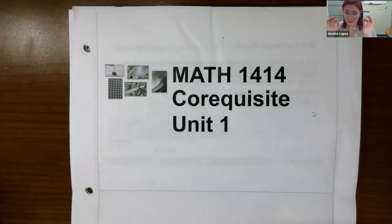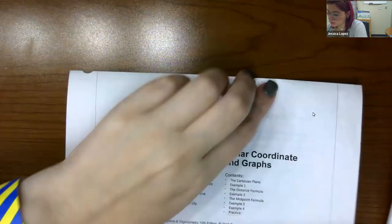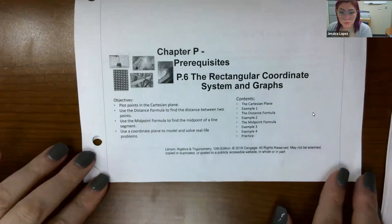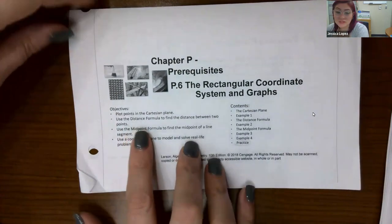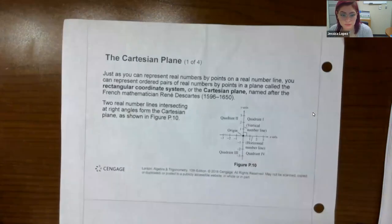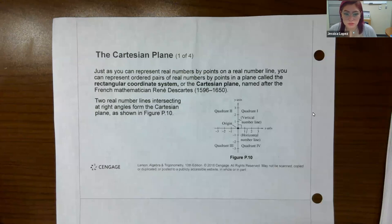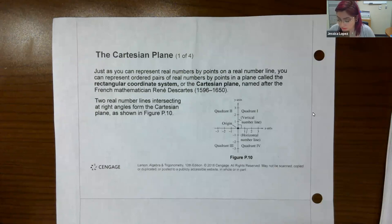Hello, class. We're going to start now. It's not unit one, it's unit two. But we're going to start working on section P.6, which is the rectangular coordinate system. We're going to start off with talking about how to plot points in the Cartesian plane, which is also known as the rectangular coordinate system. Just as you can represent real numbers by points on a real number line, you can also represent ordered pairs of real numbers by points in a plane called the rectangular coordinate system, or even the Cartesian plane.